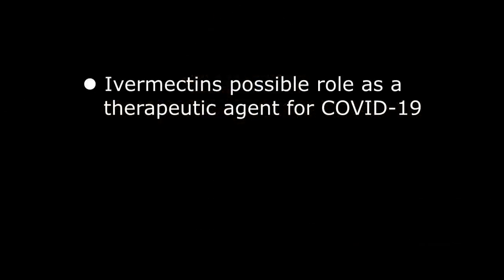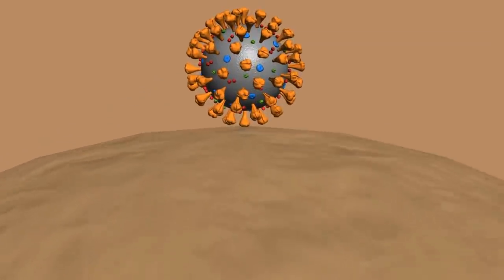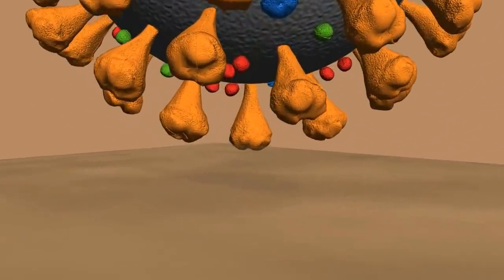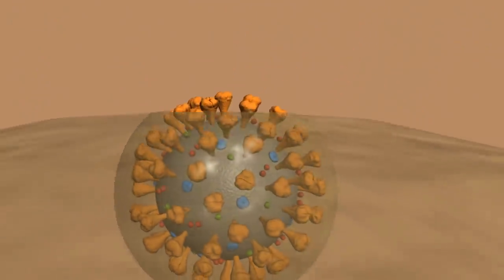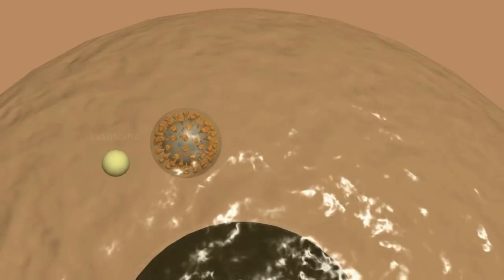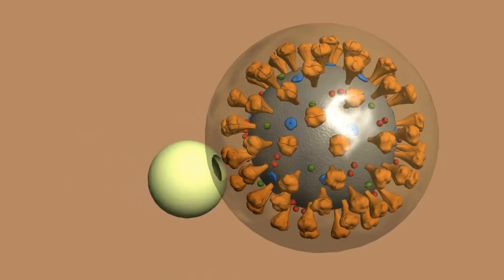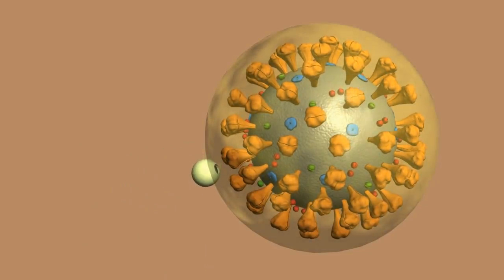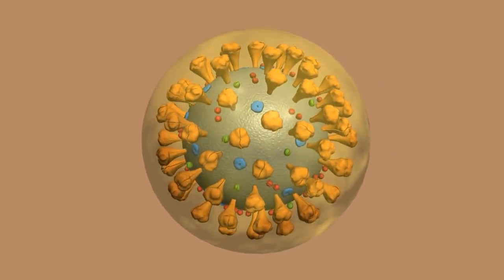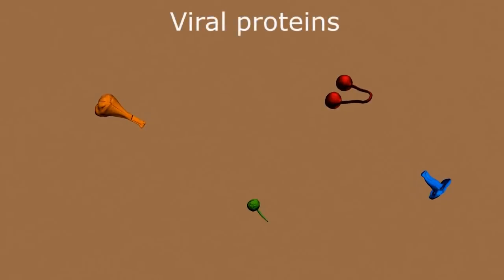To understand Ivermectin's possible role as a therapeutic agent for COVID-19, let's briefly review the process of viral host infection and replication. Mediated through the surface spike proteins, the virus accesses the host cell through either membrane fusion or endocytosis. The endocyte fuses with cytoplasmic lysosomes, and the lysosomal proteases break down the surface proteins and expose the viral genome for replication by the host ribosomes. In the process, some of the viral antigenic proteins are released into the cytoplasm.